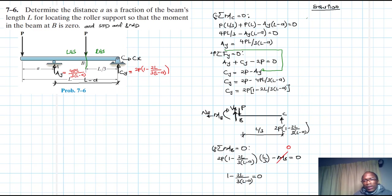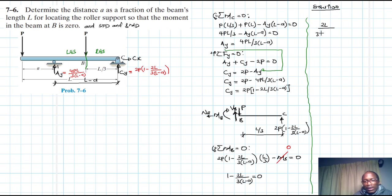Writing this equation: 2L divided by (3L minus A) equals 1. Therefore 3L minus 3A equals 2L. Then 3A equals 3L minus 2L, so A equals L over 3.